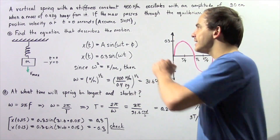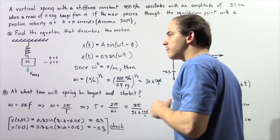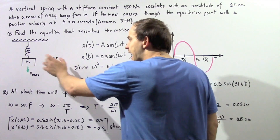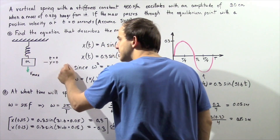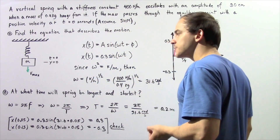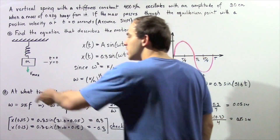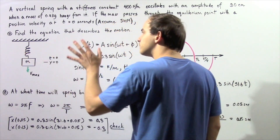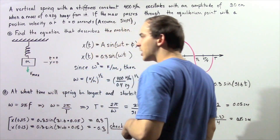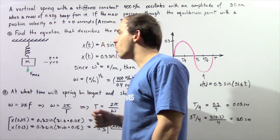We are assuming that the object is in SHM, or simple harmonic motion. Looking at our diagram of the mass oscillating via the spring, we know at time equals 0 our mass passes the equilibrium position, so our displacement along the y-axis is 0 meters. That implies the force acting on the object is 0, so the velocity is maximum. We're also told the velocity points in the positive direction, so going downward is positive and going upward along the y-axis is negative.